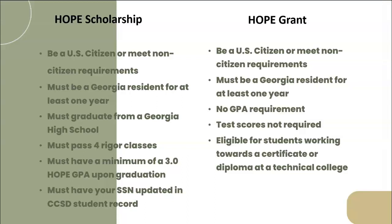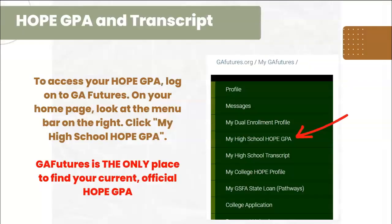The HOPE grant has slightly different requirements — they don't have that GPA minimum, but it is used specifically at technical colleges. Your student can use the HOPE scholarship at a technical college as well, but if your student does not meet the HOPE scholarship requirements, the HOPE grant is a great way to still get money from the state of Georgia to attend school while they bring up their college GPA to become eligible for the HOPE scholarship. Please make sure that your student creates a GA Futures account and links their account using their social security number. If you see an error message, bring in a copy of the social security number so we can update it — this is super important to do before their senior year. The only way to see your HOPE GPA and rigor courses is on GAFutures.org — please create an account and the information will be already calculated for you.